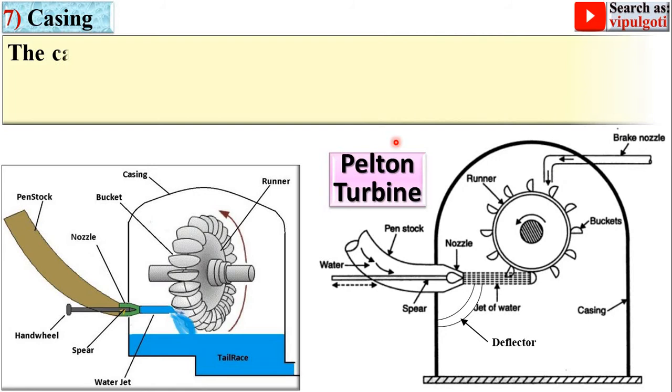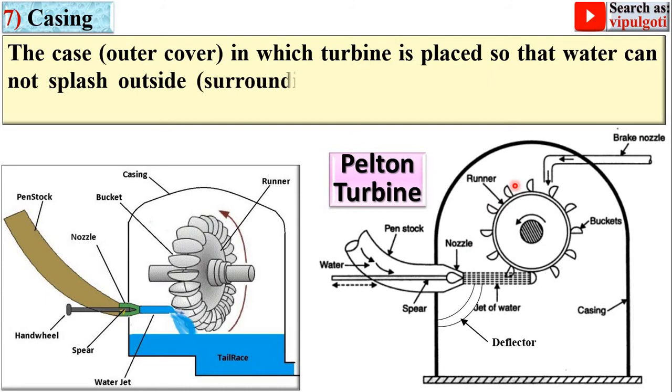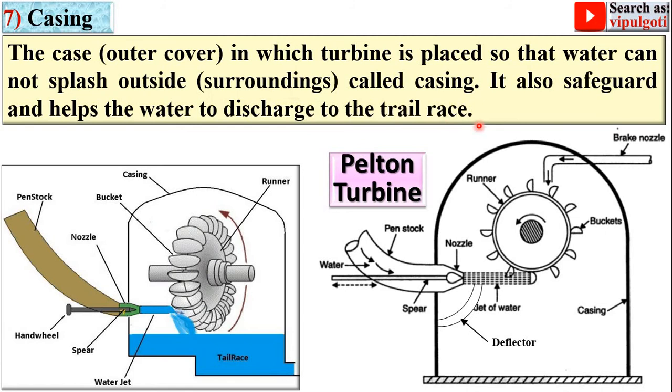Next part: the casing. The casing is the outer cover in which the turbine is placed so that water cannot splash outside to the surroundings. It also safeguards and helps the water discharge to the tailrace.